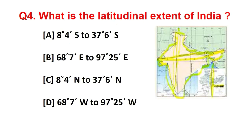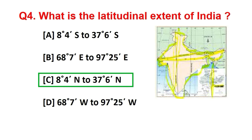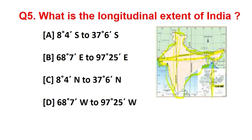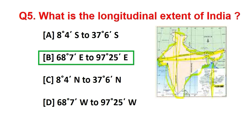Question number 4. What is the latitudinal extent of India? Answer is 8 degree 4 minute north to 37 degree 6 minute north. Question number 5. What is the longitudinal extent of India? Answer is 68 degree 7 minute east to 97 degree 25 minute east.